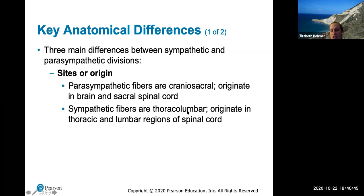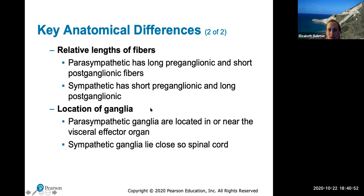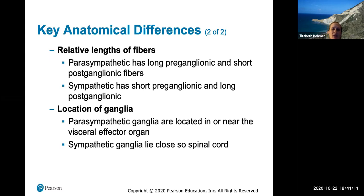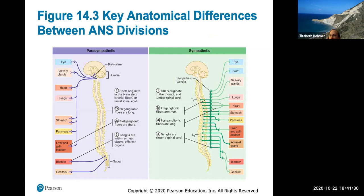Sympathetic fibers are called thoracolumbar because they originate in the thoracic and lumbar regions of the spinal cord. The relative lengths of fibers also differ: the parasympathetic has long preganglionic and short postganglionic fibers, while the sympathetic has the opposite. Third, the location of ganglia: parasympathetic ganglia are located in or near the visceral effector organ, whereas sympathetic ganglia lie close to the spinal cord in the sympathetic trunk.